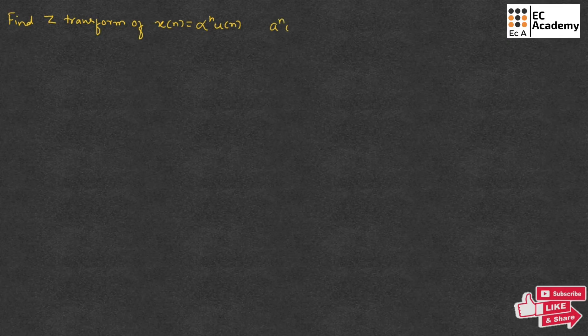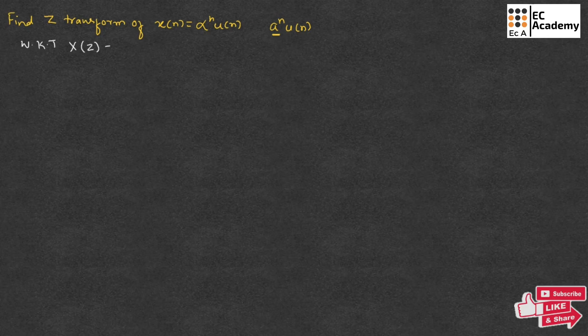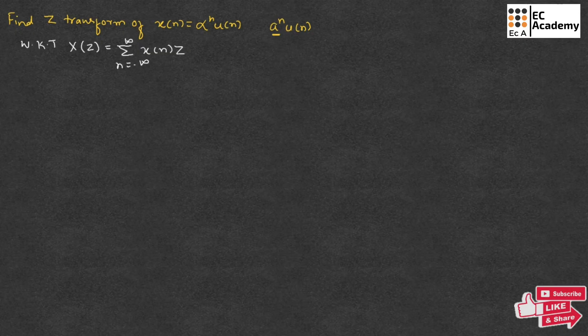Sometimes the same problem can be asked in an exam as a to the power of n times u[n] — in place of alpha, they can give a. The solution for both problems will be the same. We know that the Z-transform is given by the standard formula: X(z) is equal to the summation from n equals minus infinity to infinity of x(n) times z to the power of minus n.